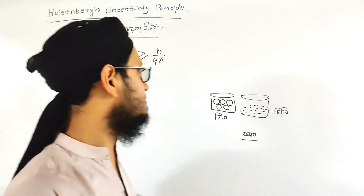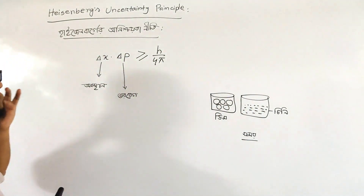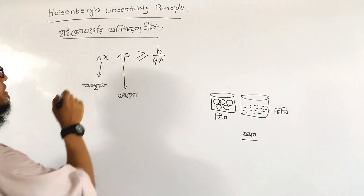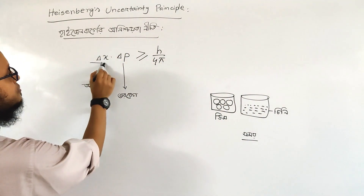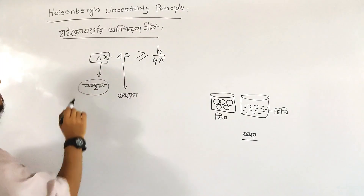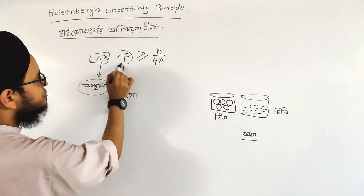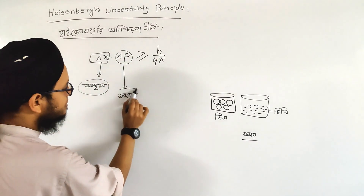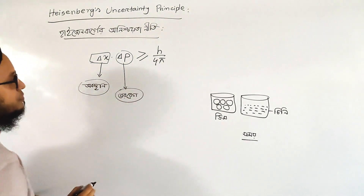This is the Heisenberg Uncertainty Principle. It is del x, which is the uncertainty in position, and del p is the uncertainty in momentum.